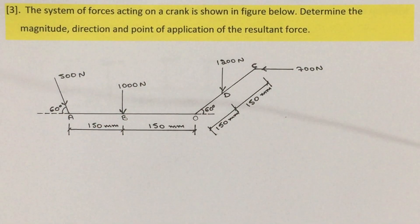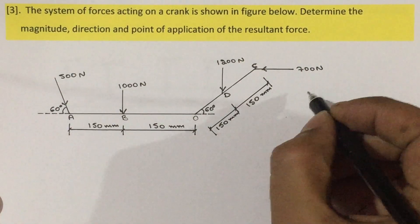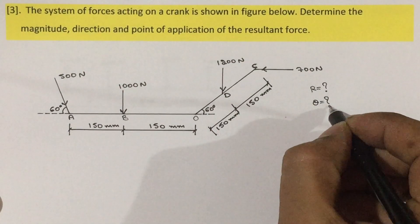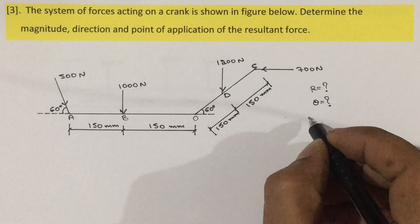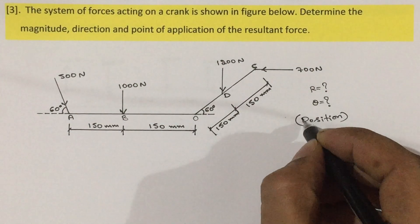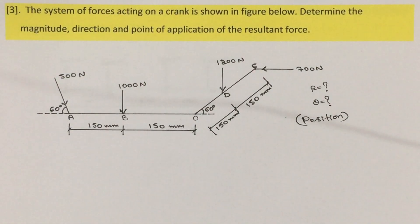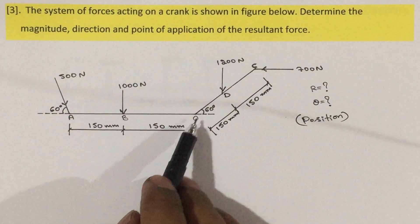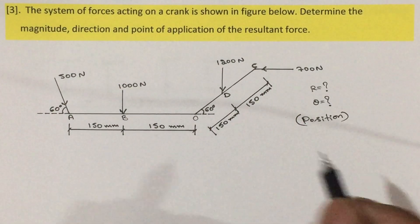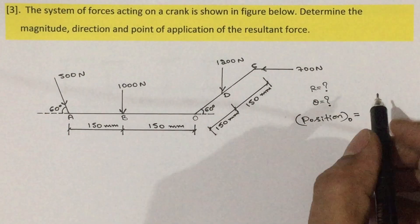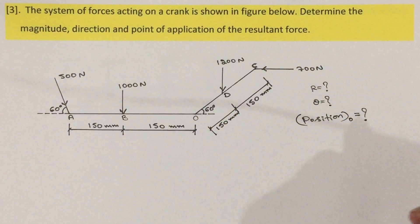Point of application is nothing but position. In the given figure, we have four different points like A, B, O, D, and C. Since no specific point is mentioned in the problem, we are going to calculate the position with respect to point O. You can choose the point when it is not given in the problem.